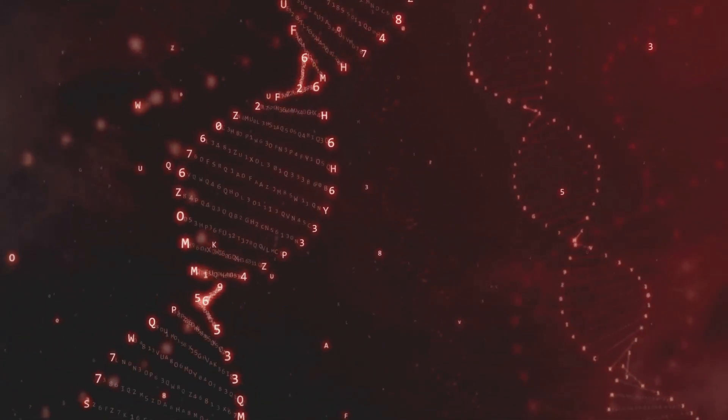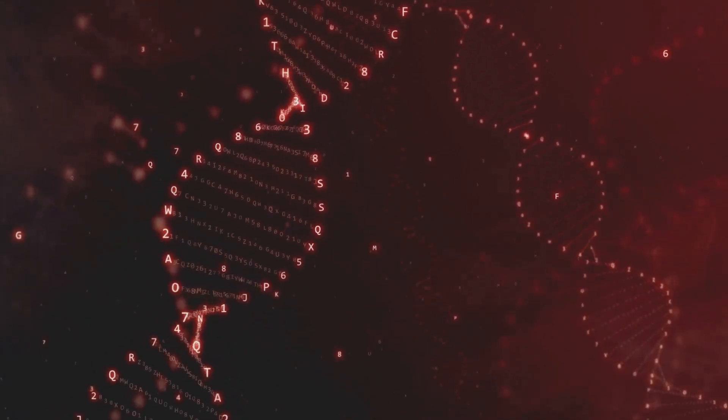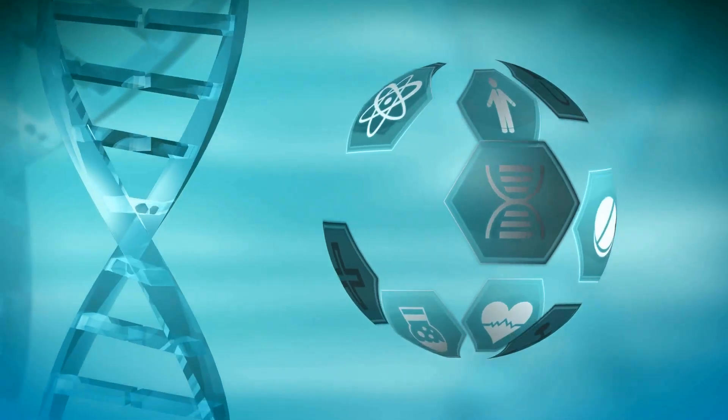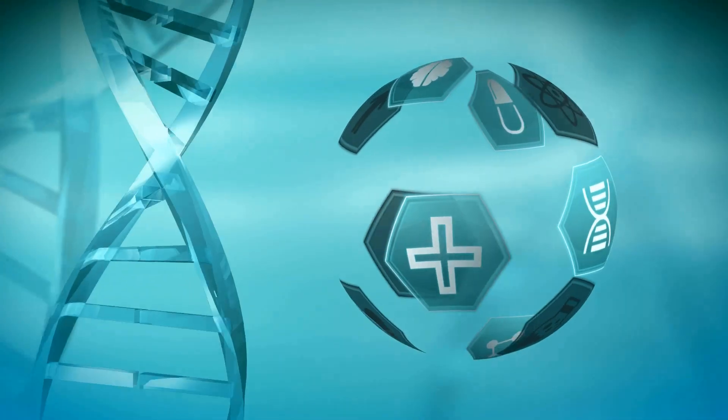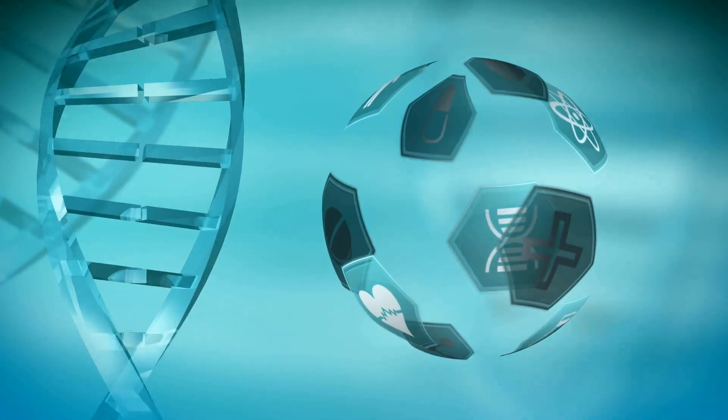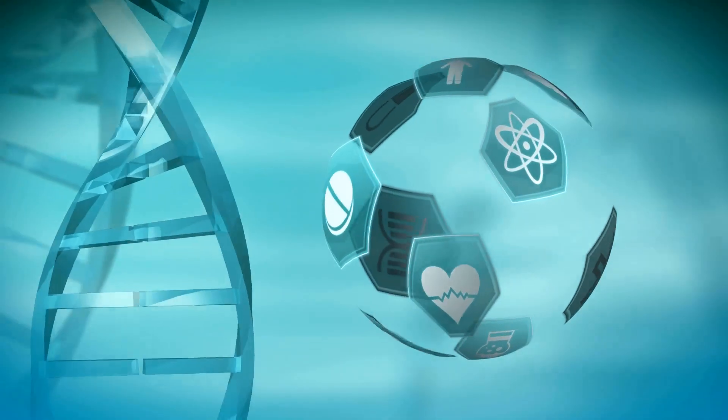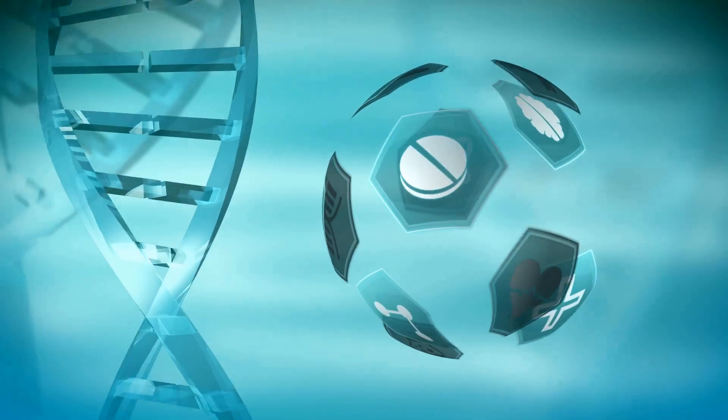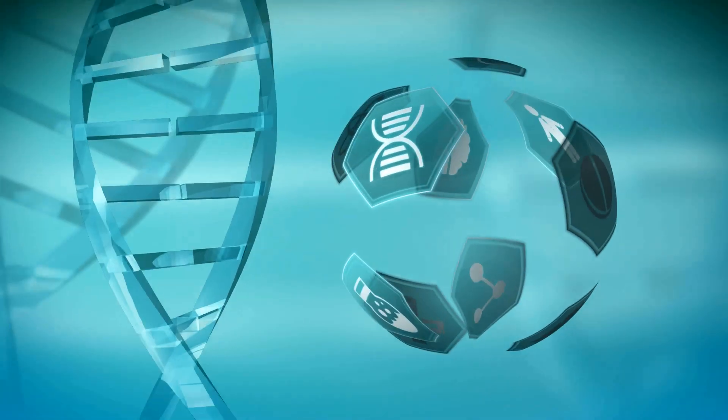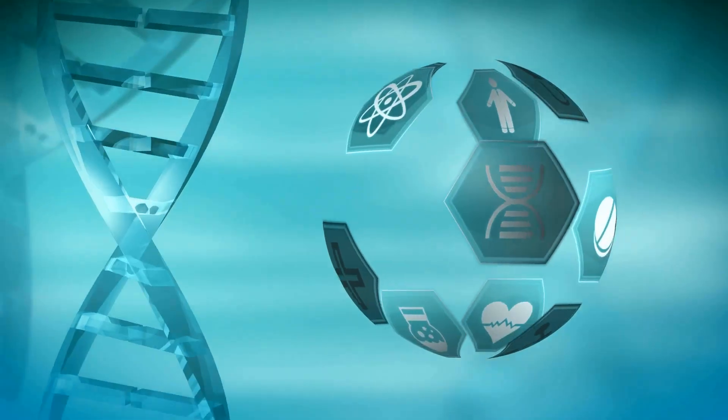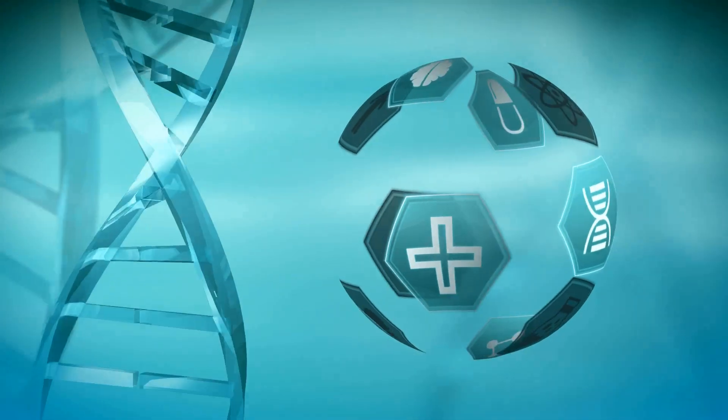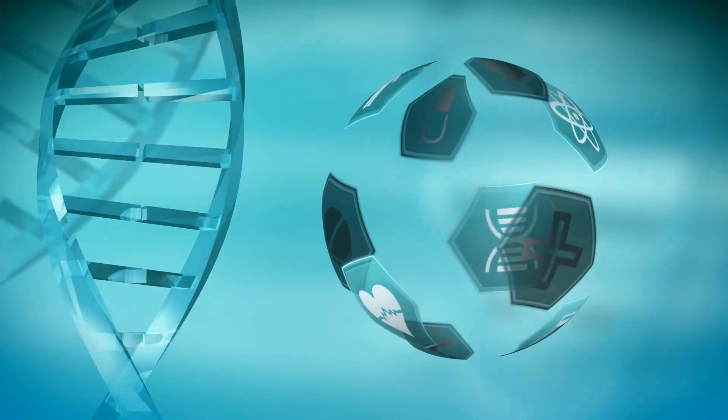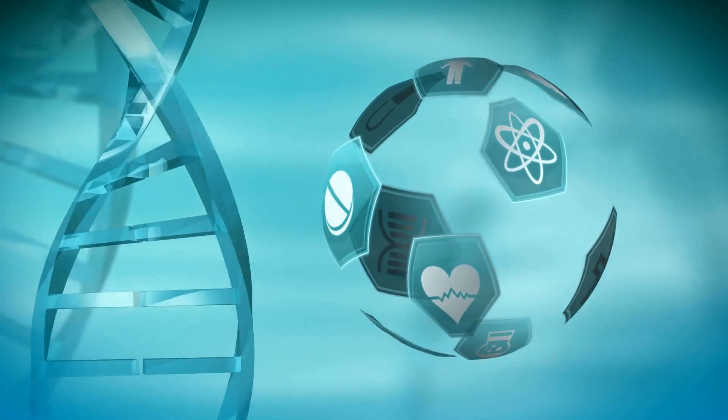Scientists have given this layer a name: the epigenome. It's a dynamic network of switches that turn genes on and off, and unlike your DNA, these switches can be flipped. The word epigenetics literally means above genetics. It's a set of instructions that doesn't change your DNA, but instead controls how it's performed. Think of it like this: your DNA is the script for a massive play. Epigenetics is the director.